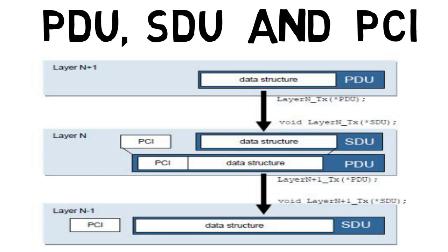A PDU comes from the upper module to the lower module as a service data unit, and a header is added, making it the PDU. When data moves from the top layer to the layer below, a header is added, and when it goes from the lower layer back to the upper layer, the header is removed. This is the same way the internet protocol works — each layer adds a header at every layer.